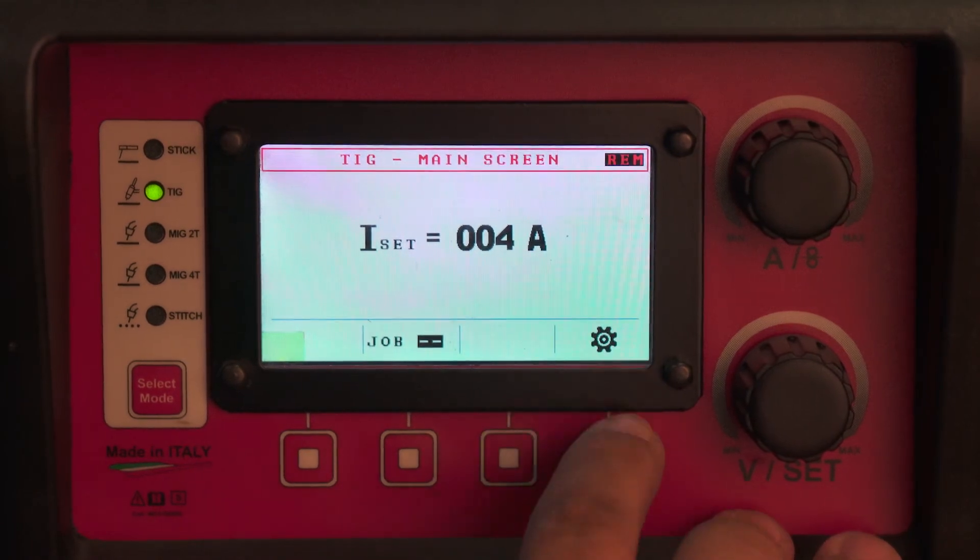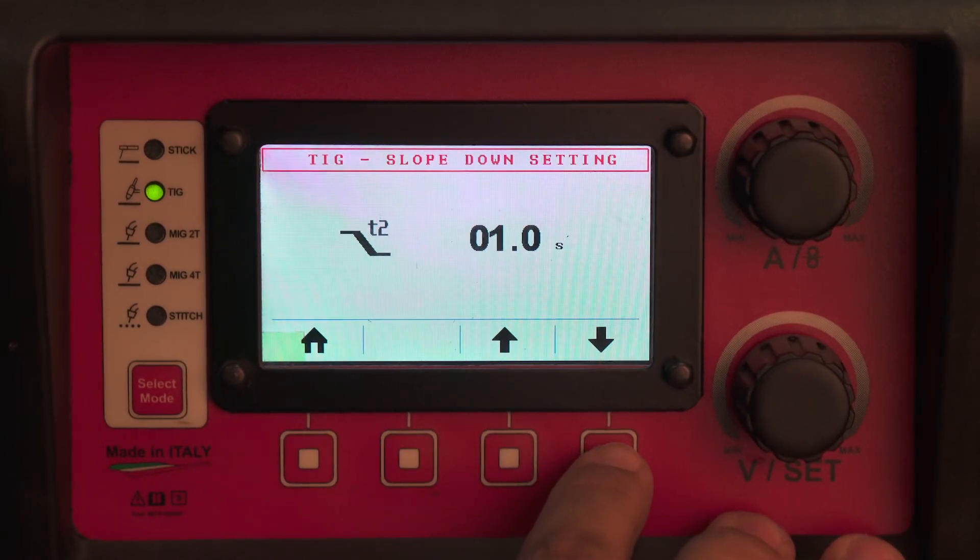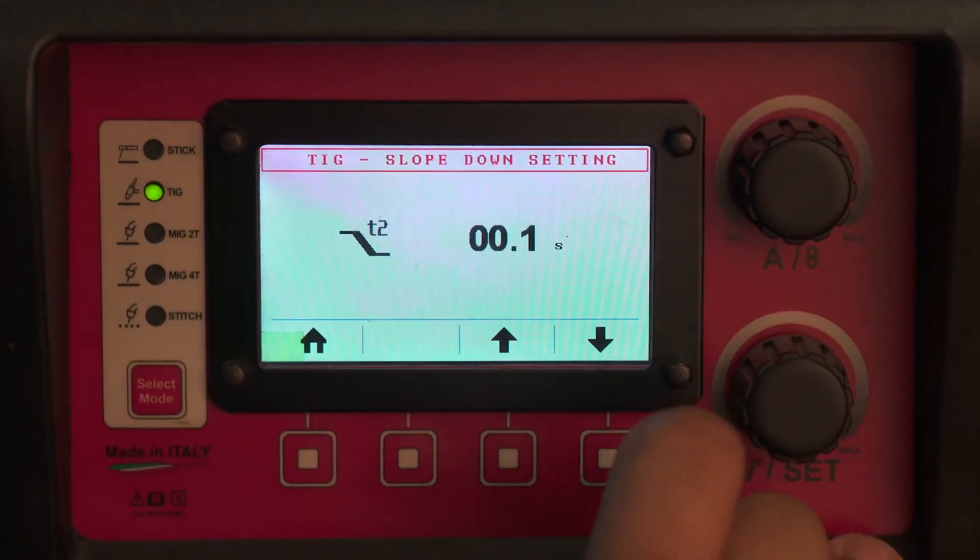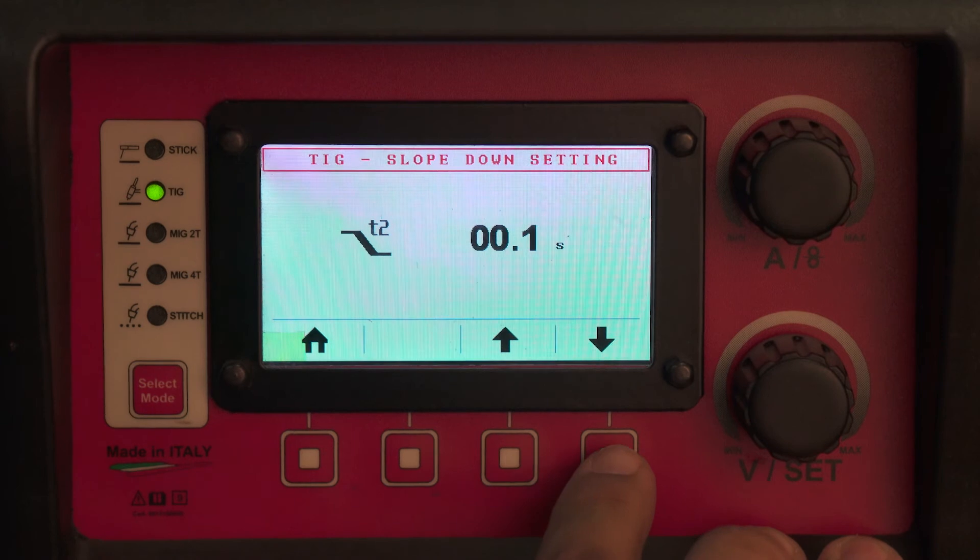In the setup menu for TIG, there's a slope down setting which you typically dial down to 0.1 seconds if you use a foot pedal.